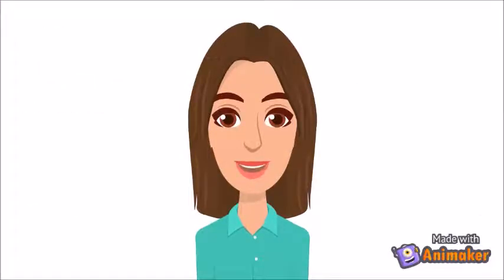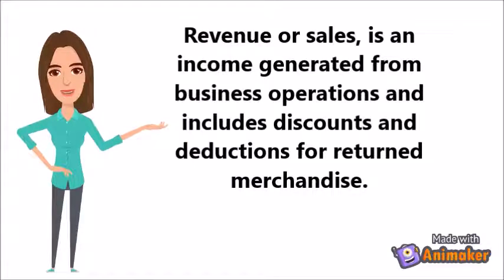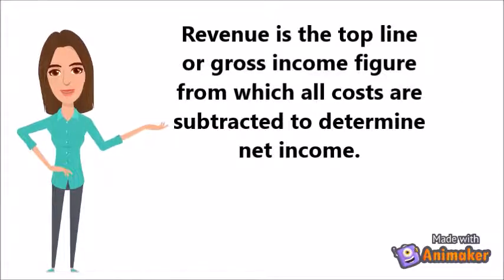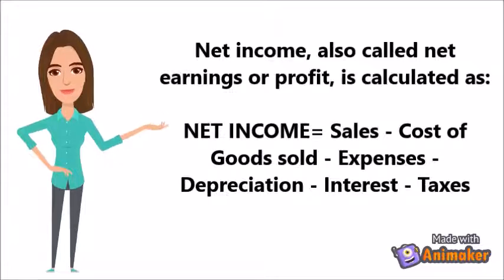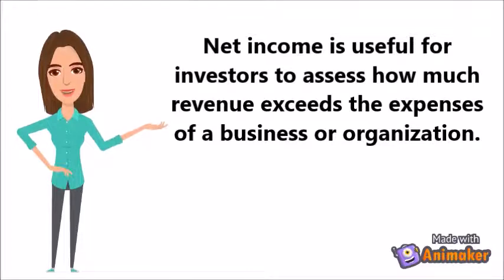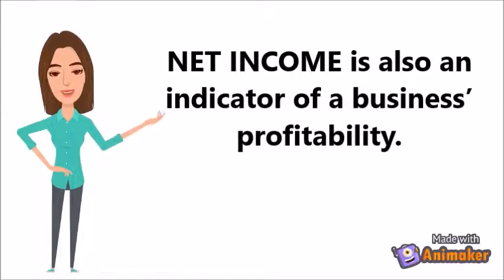Now let's proceed to revenue and net income. Revenue is commonly referred to as sales — it is the income generated from business operations and includes discounts and deductions for returned merchandise. It is the top line or gross income figure from which all costs are subtracted to determine net income. Net income, also called net earnings or profit, is calculated as sales or revenue minus cost of goods sold, selling, general and administrative expenses, operating expenses, depreciation, interest, taxes, and other expenses. It is an indicator of a business's profitability.